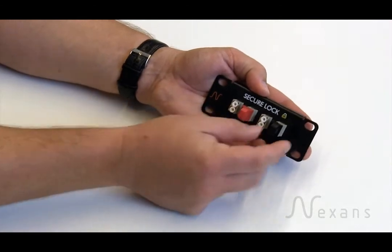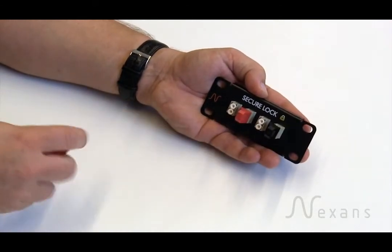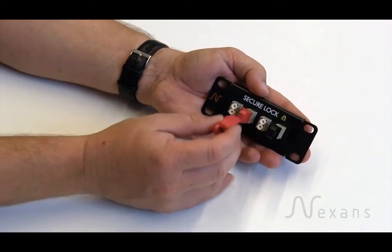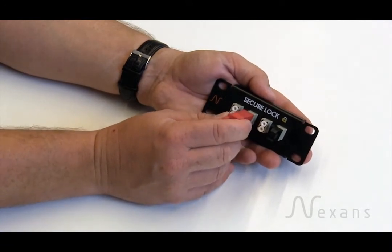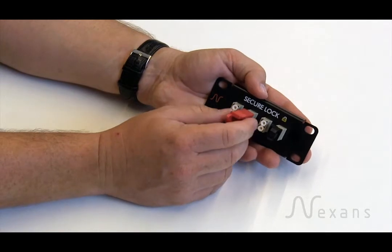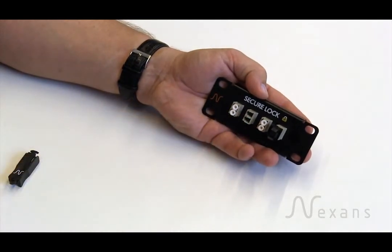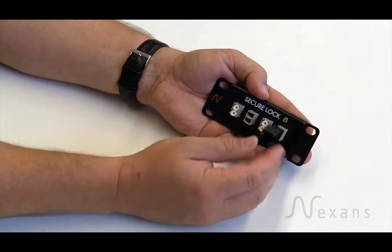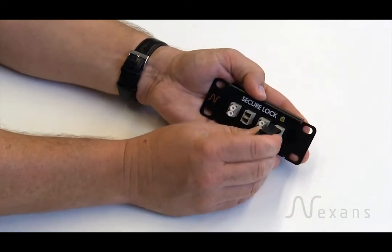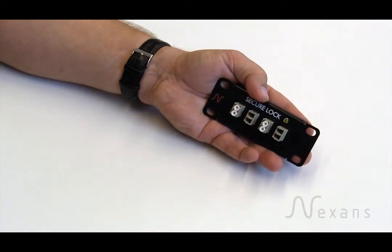You will note that you can't remove the plugs from the port until we use the appropriate coloured key. So we snap the red key onto the red plug like so and remove from the port. Snap the black key onto the black plug like so and remove the black plug.